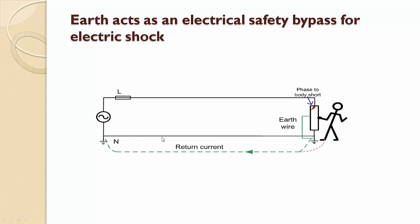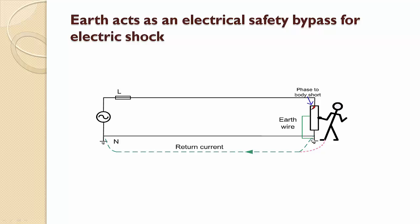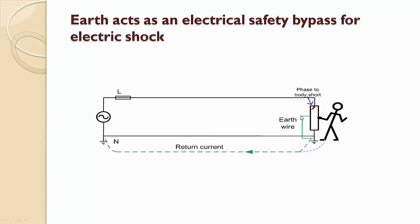Next aspect is, the earth act as a electrical safety bypass for electric shock. You can see here, what I have done is, to the previous circuit, I have added an earth wire to the electrical equipment. So here what happens? Suppose there is a phase-to-body fault. If this earth wire was not present, what would happen? Then naturally, as this guy is standing on the, is in contact with the earth.